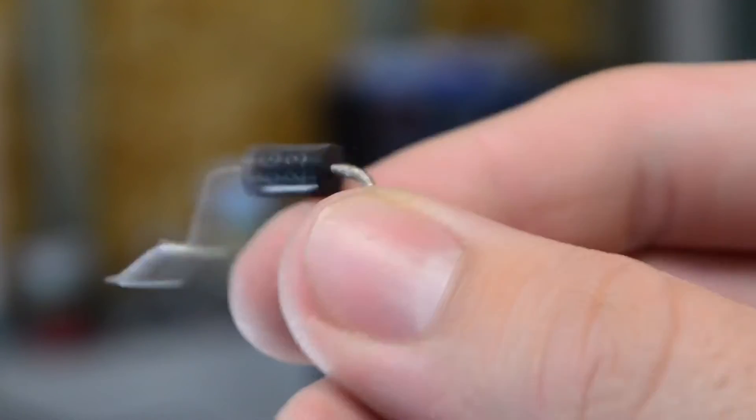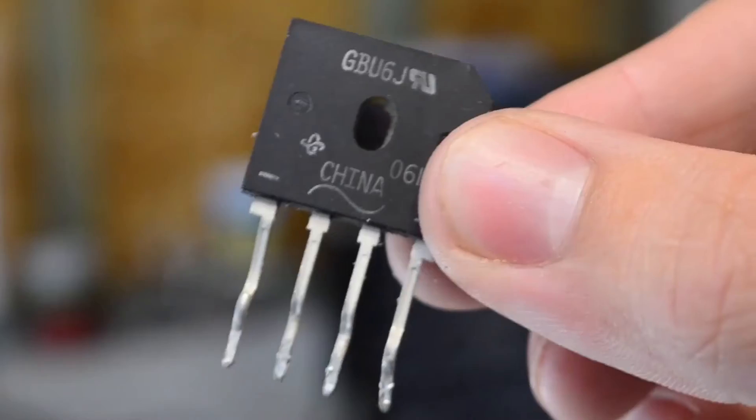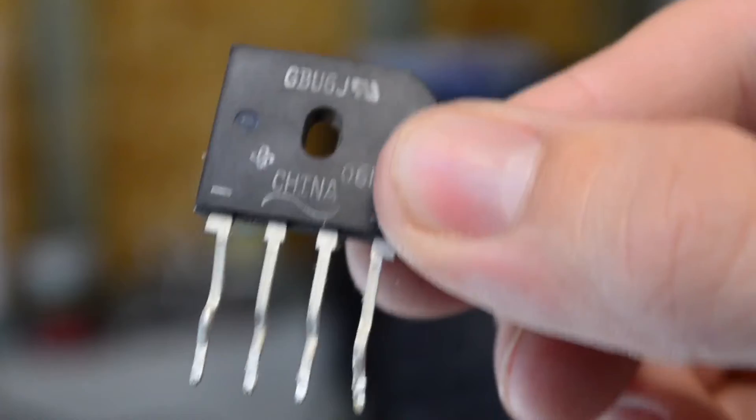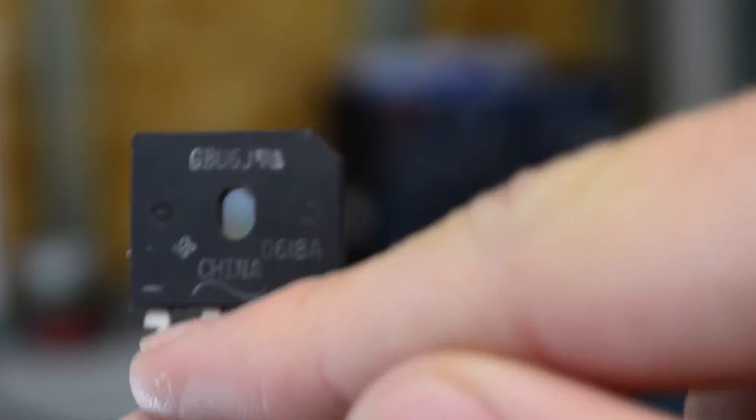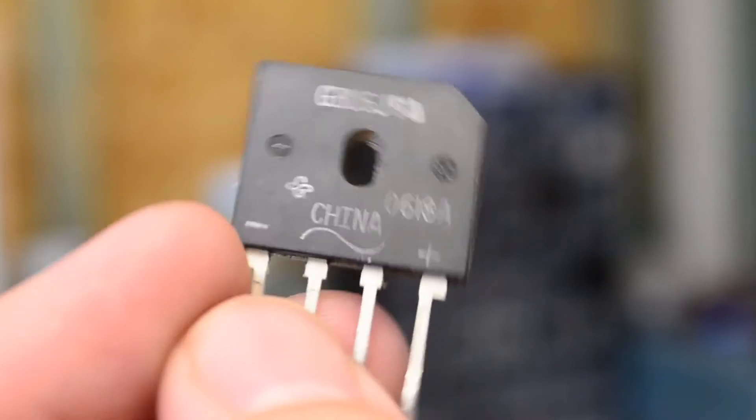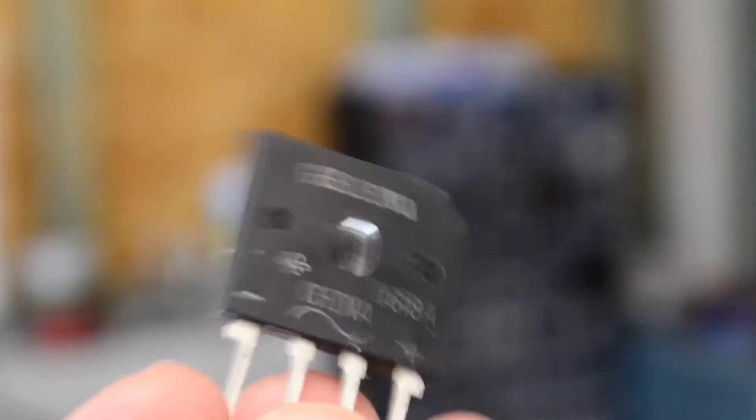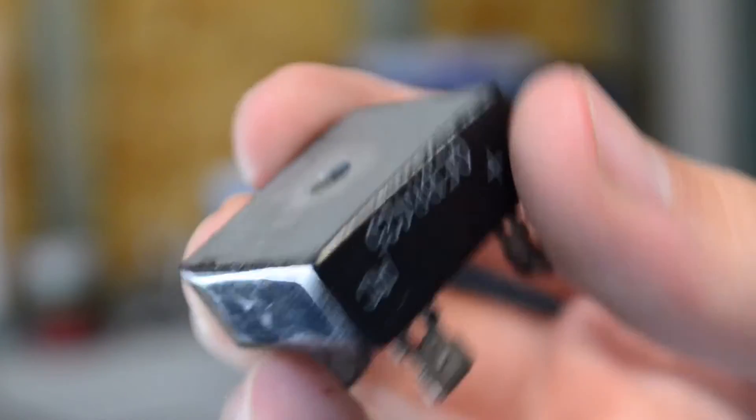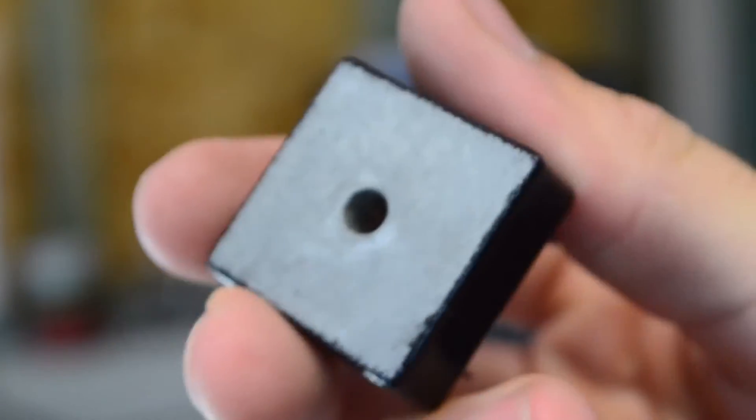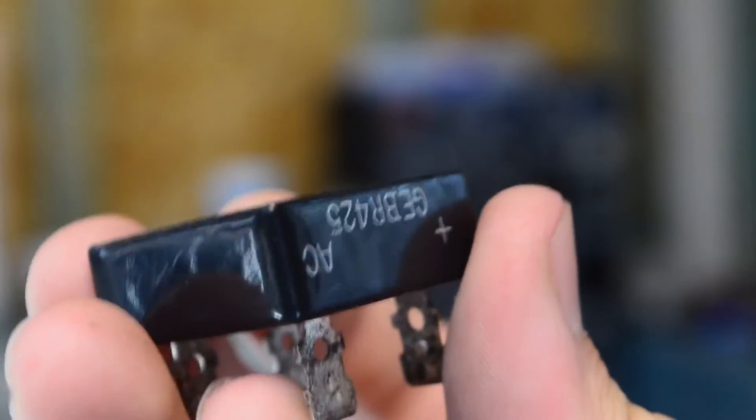You could use big diodes such as this in that configuration I showed, or you could use rectifiers such as this. As you can see, the two inner pins here are going to be the AC, and then over here we have our negative and our positive. You can salvage these off of most electronic projects such as TVs and a variety of other things. There are also rectifiers such as this one which are made to handle a ton of power, and if you find one of these, you can make a full bridge rectifier that can give you quite a lot of watts.